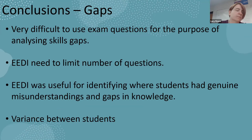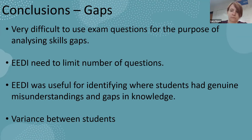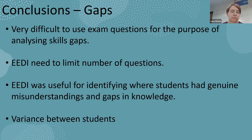In conclusion, it was very difficult to use exam questions for the purpose of analysing skills gaps. Too many had to be discounted for various reasons, so we had to almost entirely go back to the drawing board. ED was a little better, but our mistake was giving too many of each type of question — students became disengaged and scores noticeably slumped towards the end. We found, for example, that students struggled with prime factor trees as they had issues with both factors and prime numbers. However, there was too much variance between students to identify consistent gaps across the cohort, presumably due to the varied schools they came from, and even on an individual basis students didn't consistently get the same questions incorrect.